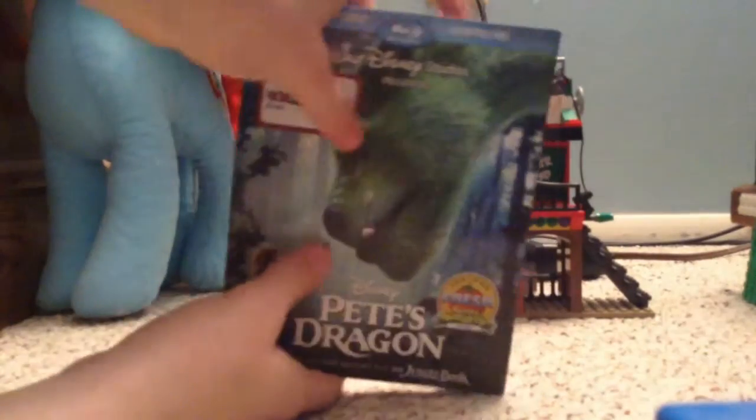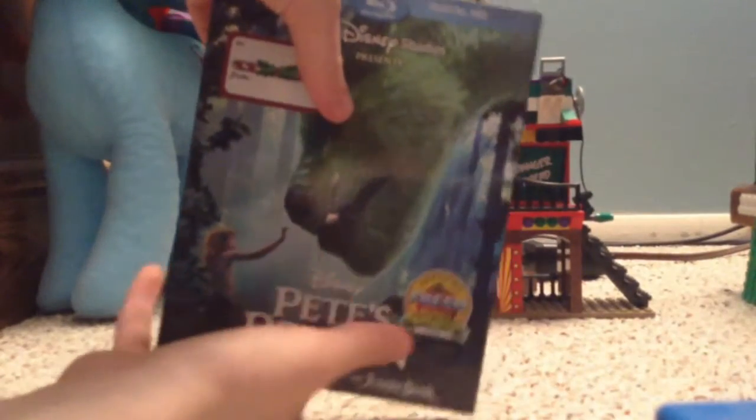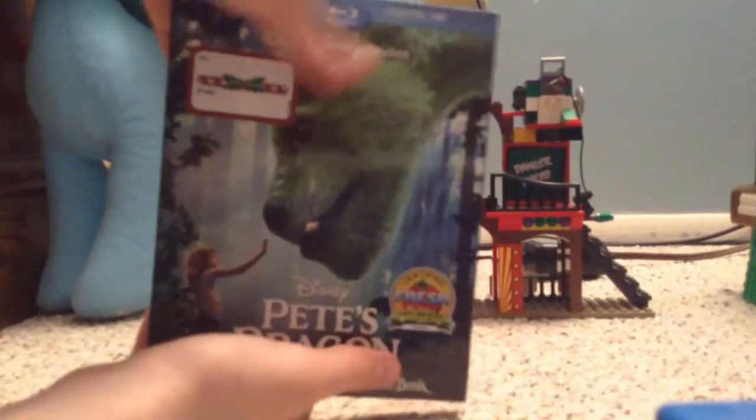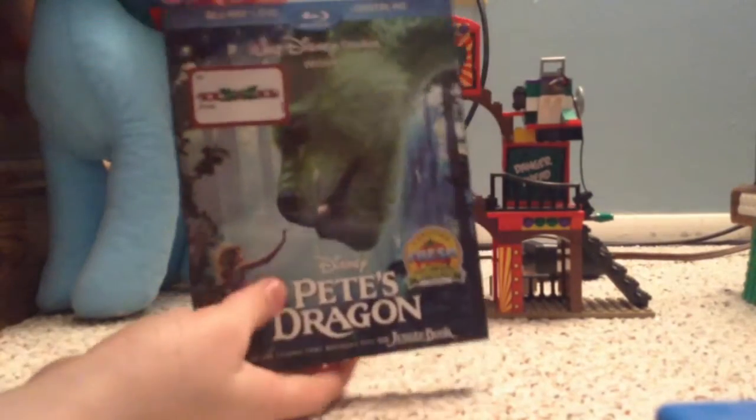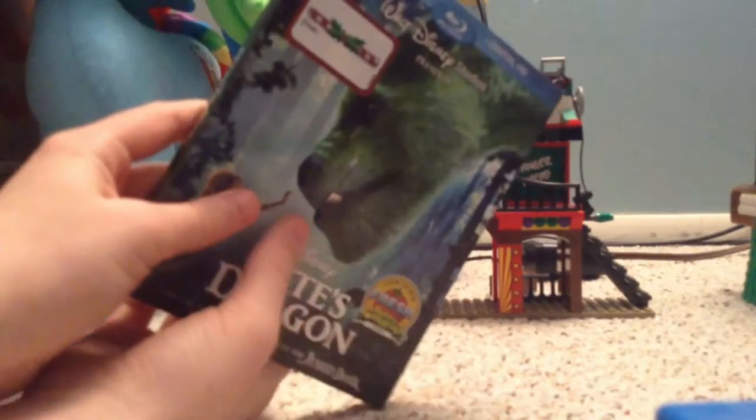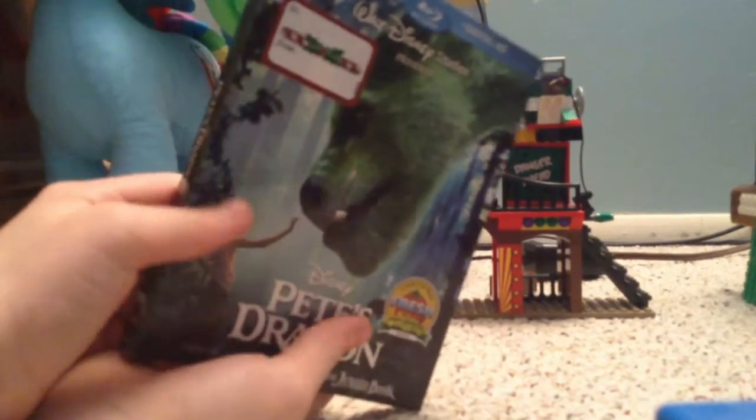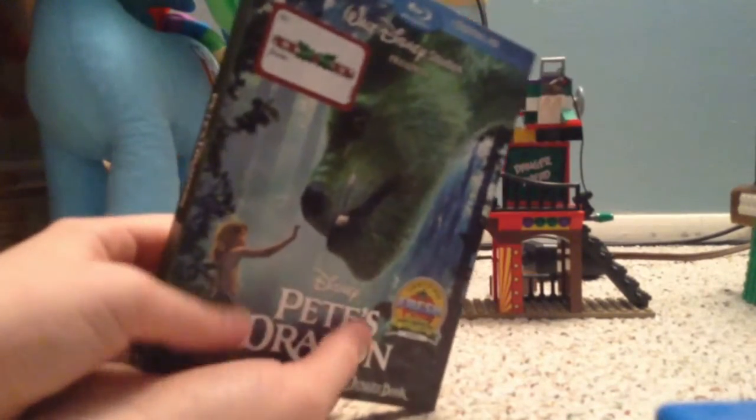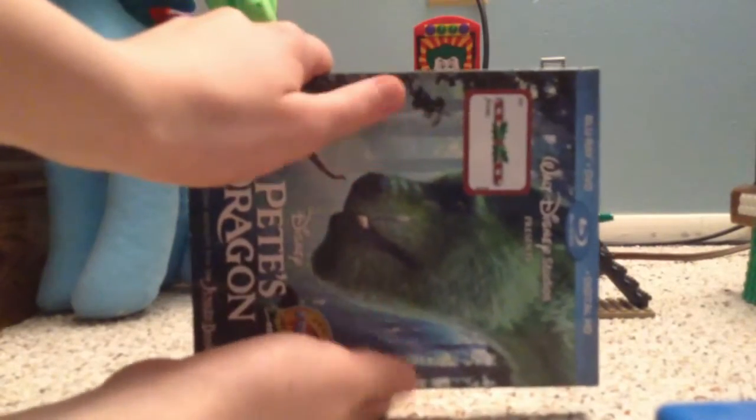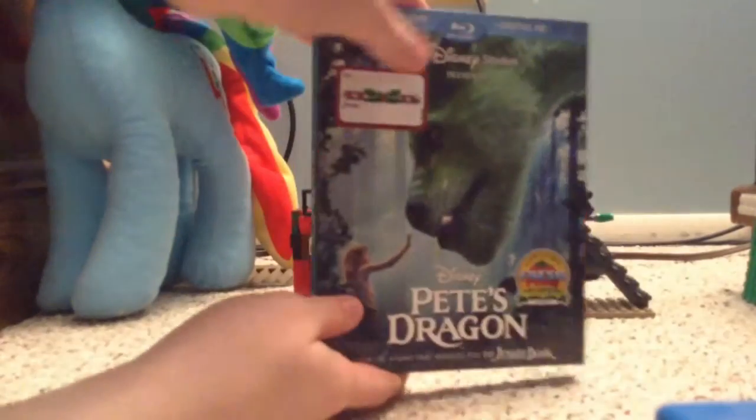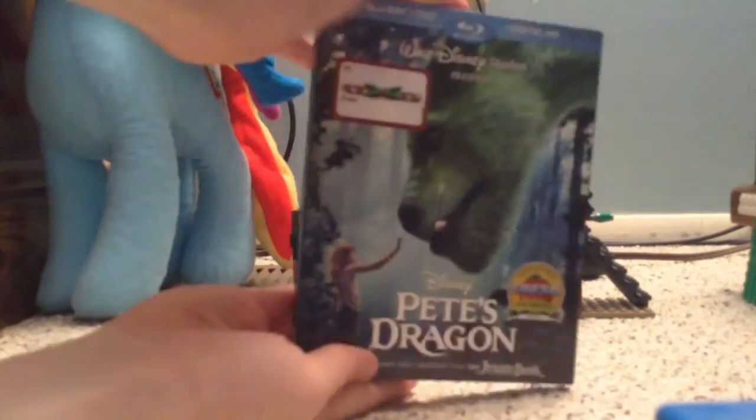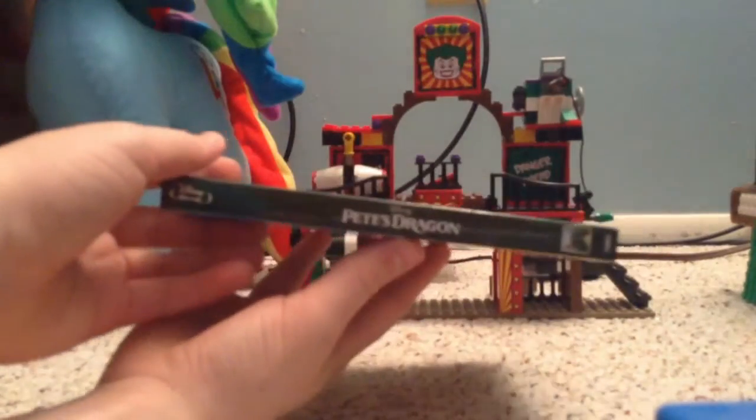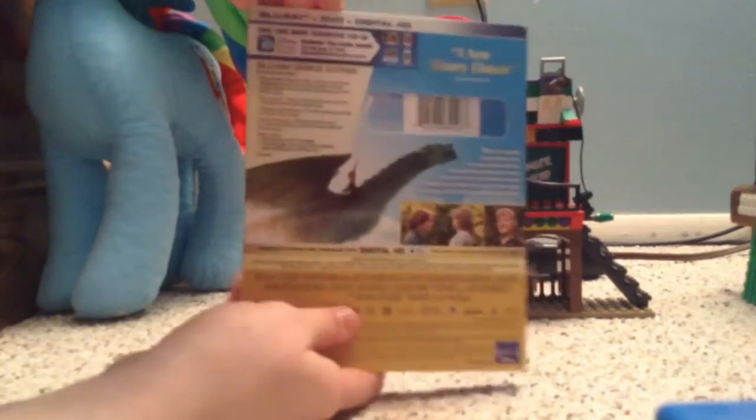So we have Pete's Dragon next, and it has a Christmas sticker on it for weird reasons. Only the title is embossed, but the boy is embossed, and Elliot's just a matte finish. It says Walt Disney Studios on there, it's certified fresh on Rotten Tomatoes, and here's the back artwork.